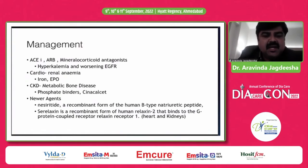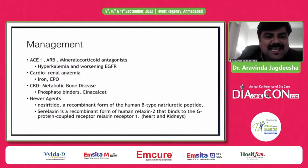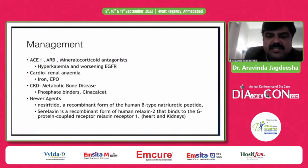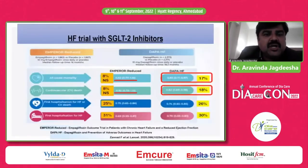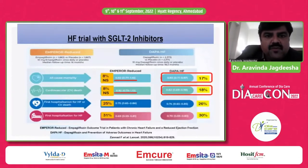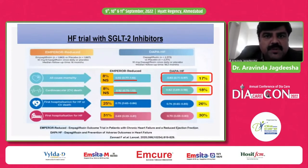For cardiorenal anemia, treatment with erythropoietin and iron; for CKD metabolic bone disease, phosphate binders and cinacalcet. Newer agents include nesiritide — a recombinant form of human B-type natriuretic peptide — and serelaxin, a recombinant form of human relaxin-2 that binds the G protein-coupled relaxin receptor in the heart and kidneys. Regarding heart failure with SGLT2 inhibitors, the EMPEROR-Reduced and DAPA-HF trials demonstrated the beneficial effect of SGLT2 inhibitors in management of heart failure.